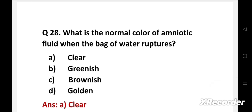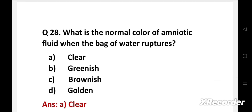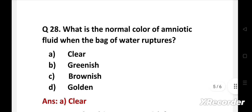Right answer is option A: clear. Green color indicates meconium stain. Golden color indicates Rh isoimmunization. Greenish yellow or saffron color indicates post-maturity, and dark brown or tobacco juice color indicates intrauterine death.